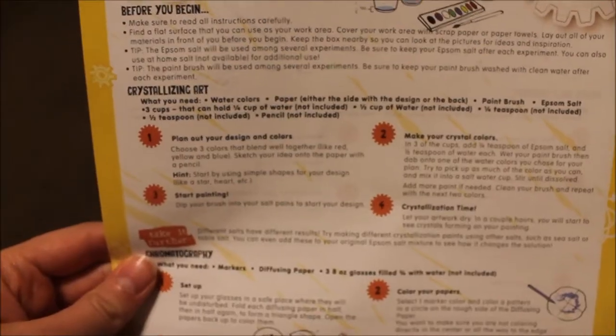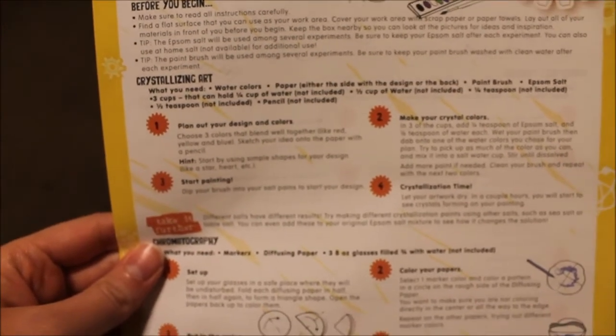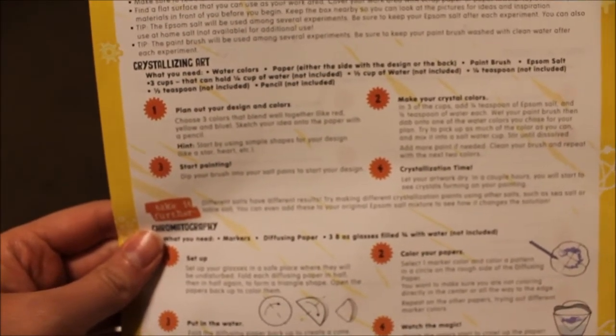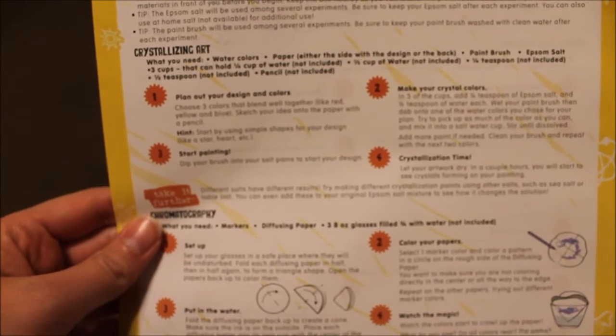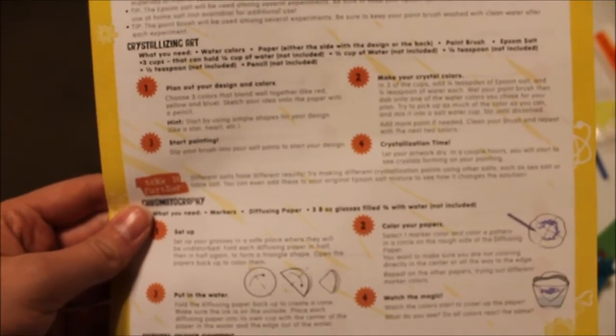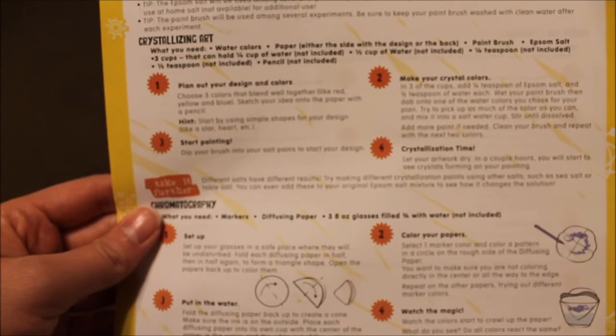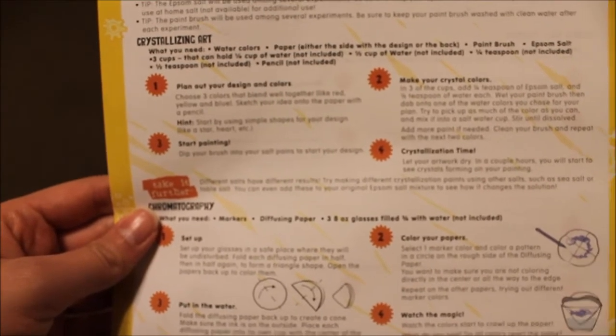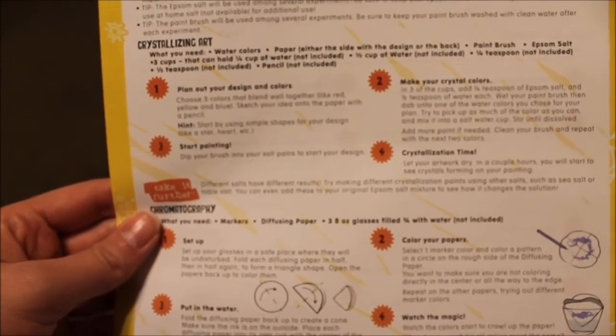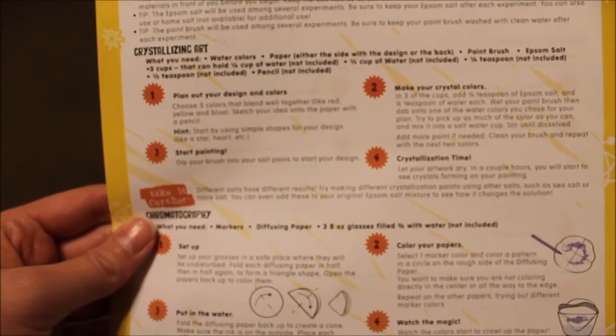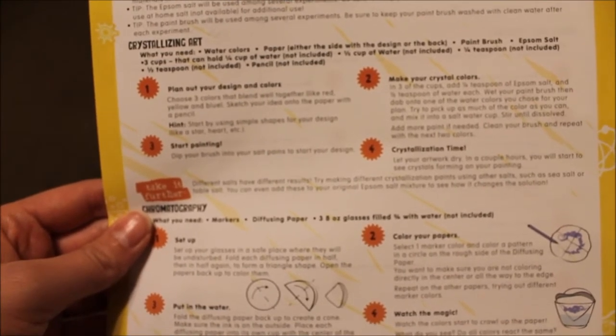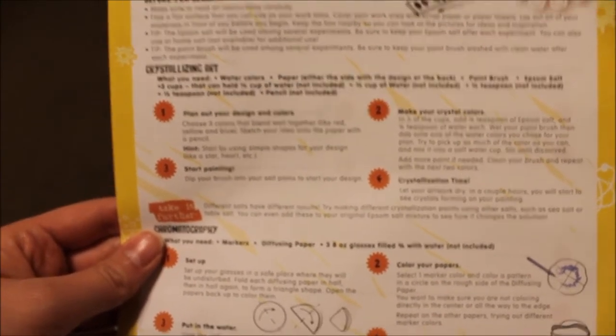I'm doing crystallizing art and I have everything that I need: the watercolors, paper, paintbrush, and the salt because it comes with all that. However, it has three cups not included, water not included, teaspoon, and a pencil also not included. So it doesn't come with everything that you need.